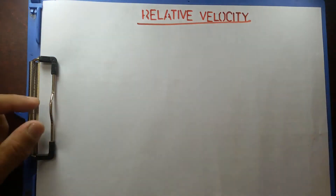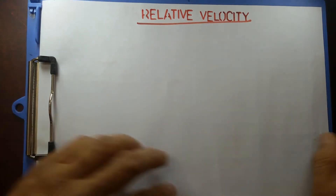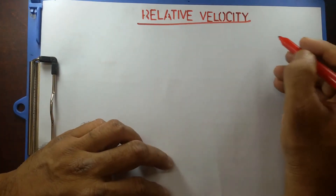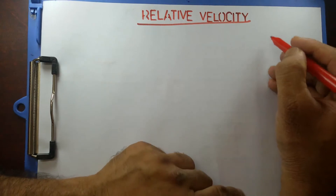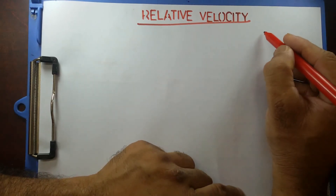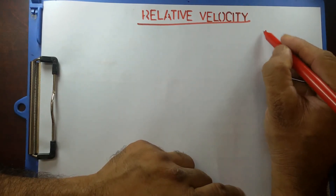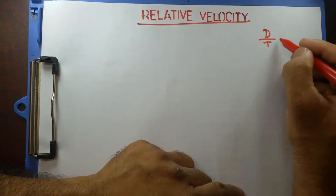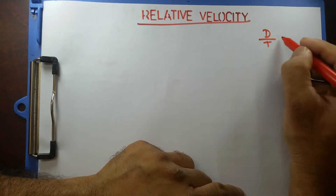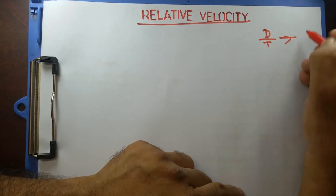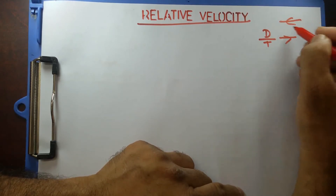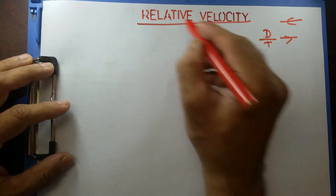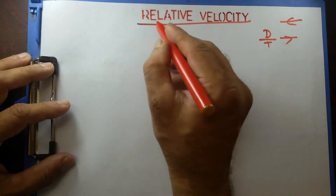Good morning. Let's talk about relative velocity. What is velocity? Velocity is distance covered over a period of time in some direction — either this side, that side, some direction. And that's our velocity.